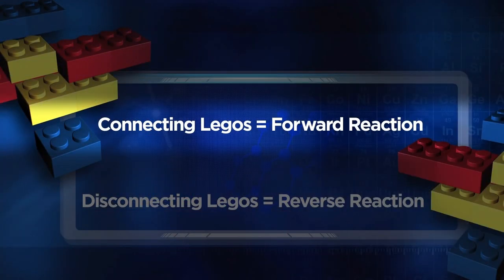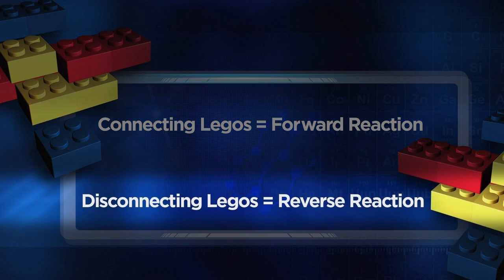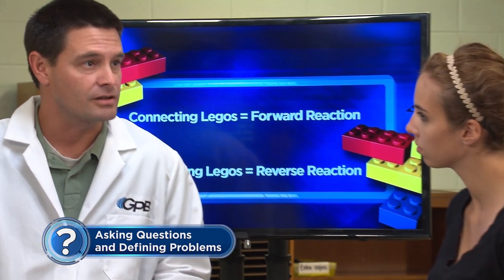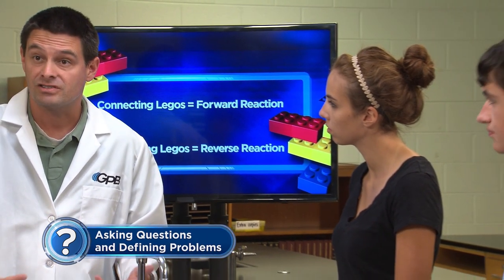This person will represent the forward reaction. The other team member will reach into the box without looking and remove one Lego. If the Lego removed is a product — two pieces already connected — take apart the product, representing reforming the reactants. If the Lego removed is a single piece, return it immediately. This person represents the reverse reaction. I'll shake the box of Legos to represent the kinetic energy of the system.